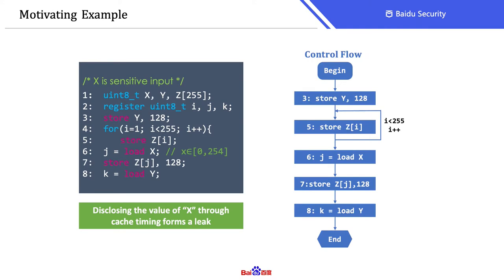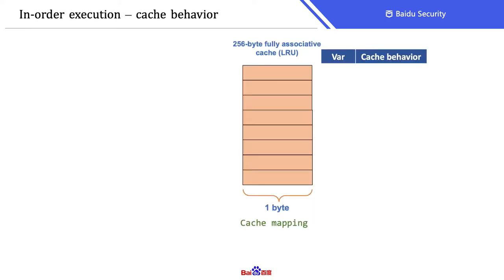On the right side, we have a control flow of this program. There is only one program path. The program first stores Y, then executes a loop to store an array Z. After the loop, it loads the value of X to J, and stores Z[J], and finally it reads Y. We use a 256-byte fully associative cache with the LRU replacement policy to study the cache behavior of this program.